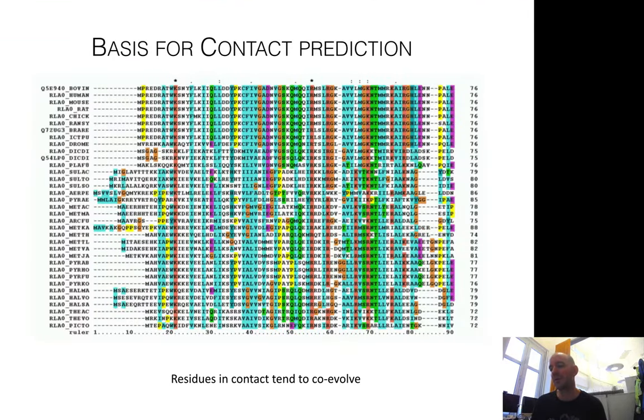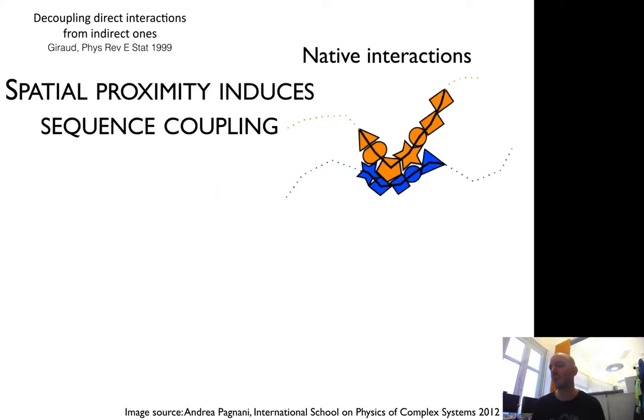The whole idea is basically this: you take the multiple sequence alignment, look at two columns, and see if there are correlations—for instance, in one position you have a mutation from big to small amino acids and in the other from small to big. This is called co-evolution or mutual information. This method has been around since the mid-90s. Unfortunately, it didn't really work well for contact predictions, but the idea is that if residues are in contact, they co-evolve.